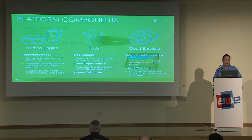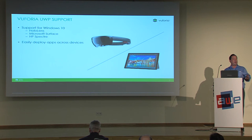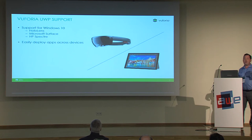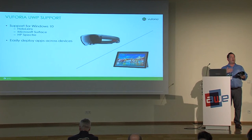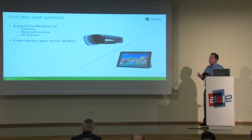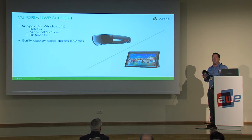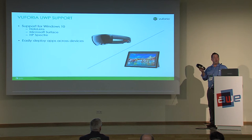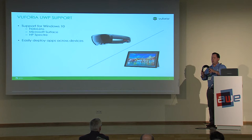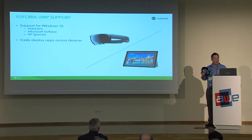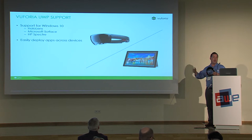What I'm going to talk about today is specifically our support for UWP applications, and among those, the support for Microsoft HoloLens. This came out relatively recently. We had traditionally been Android and iOS. When we introduced UWP support, it opened up the whole world of Microsoft devices. Currently we're supporting Surface and Spectre devices, and we also have a specific SDK variant available for Microsoft HoloLens, adding features I'll discuss in a moment.